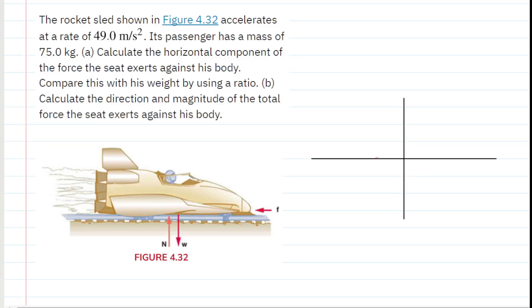The rocket sled shown in the figure accelerates at a rate of 49 meters per second squared. Its passenger has a mass of 75 kilograms. Calculate the horizontal component of the force the seat exerts against his body, and compare this with his weight by using a ratio.